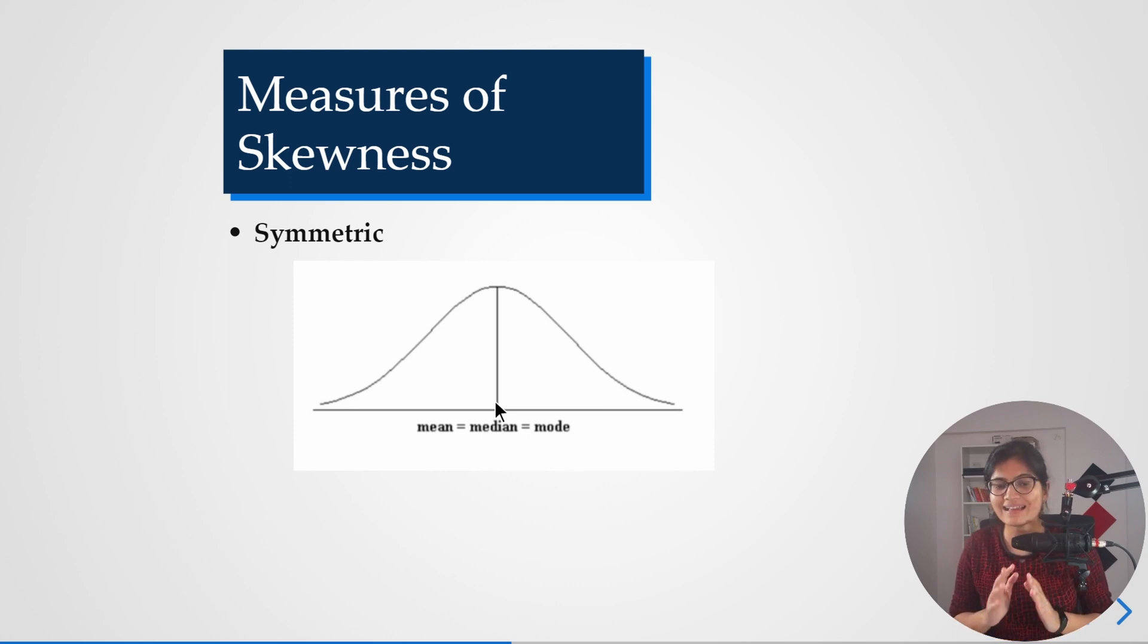As you can see, at that point of time all these three values are equal. That is the only distribution which assures you that the value of mean, median, and mode will become equal to each other.